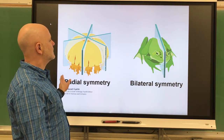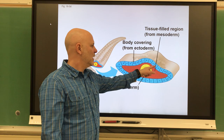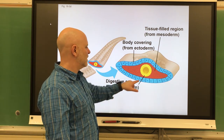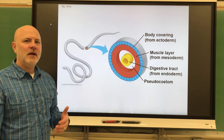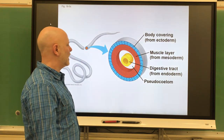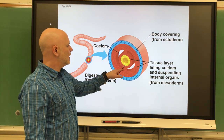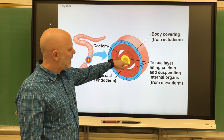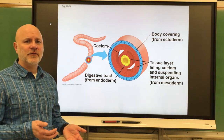Next is body cavity. The first type is being acoelomate, meaning you do not have a body cavity — this is what we see with flatworms. This also shows embryological tissues: endoderm, mesoderm, and ectoderm. Next is pseudocoelomate, where they have a false body cavity — there's a space between their endoderm and their mesoderm. Next is coelomate, where you have a true body cavity — the endoderm is surrounded by mesoderm and there's a space between the different layers of mesoderm. That's how we distinguish these different organisms.